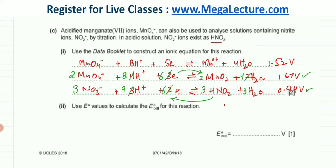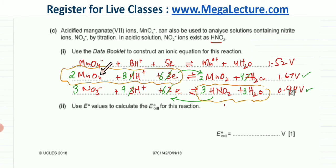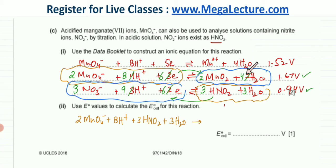I'm going to add the two equations up — adding the reactants. In the first one it's 2MnO4⁻, so: 2MnO4⁻ plus 8H⁺ ions plus, in the other equation, the reactants are 3HNO2 and 3H₂O. Adding up the products: in the first one the products are 2MnO2 and 4H₂O, and in the second one the products are 3NO3⁻ and 9H⁺.